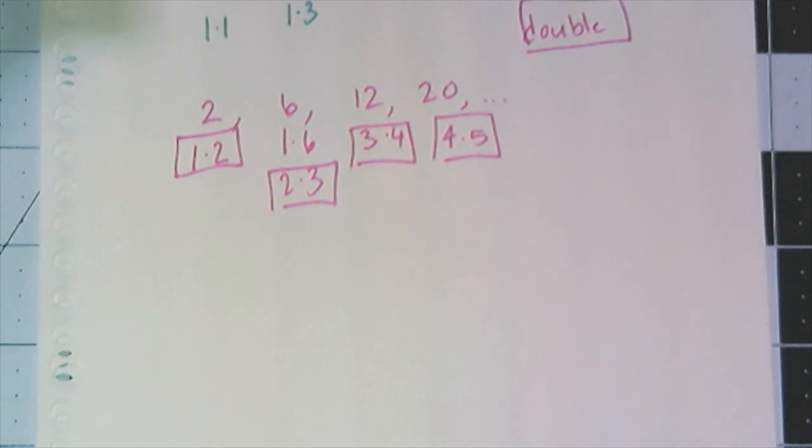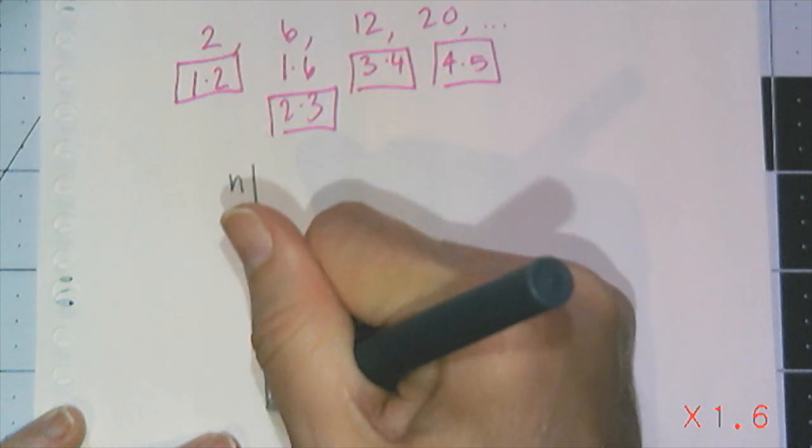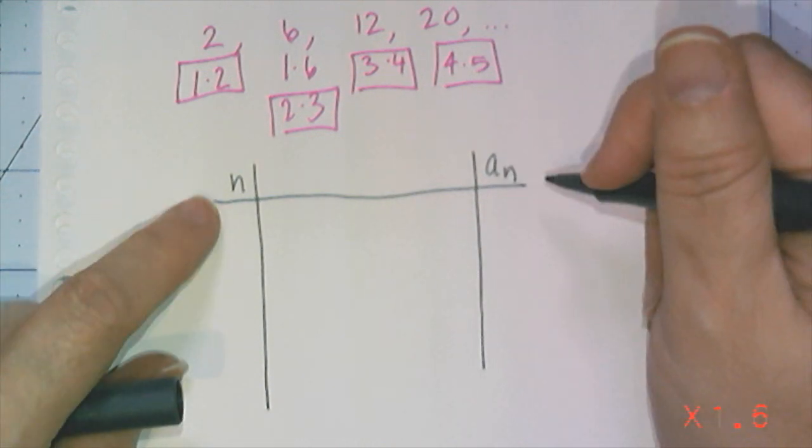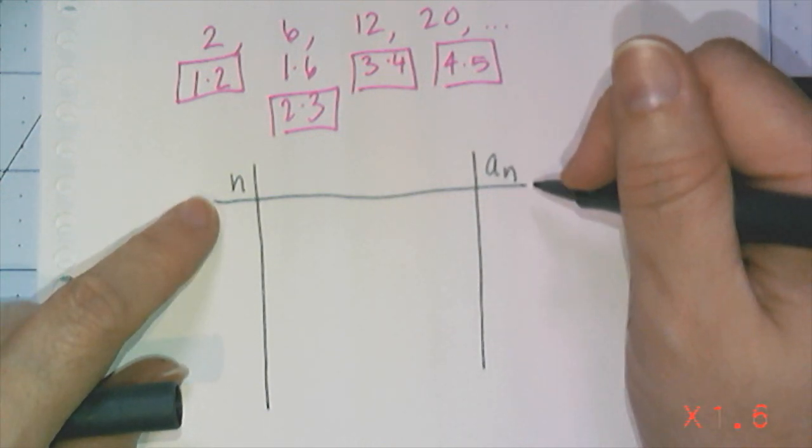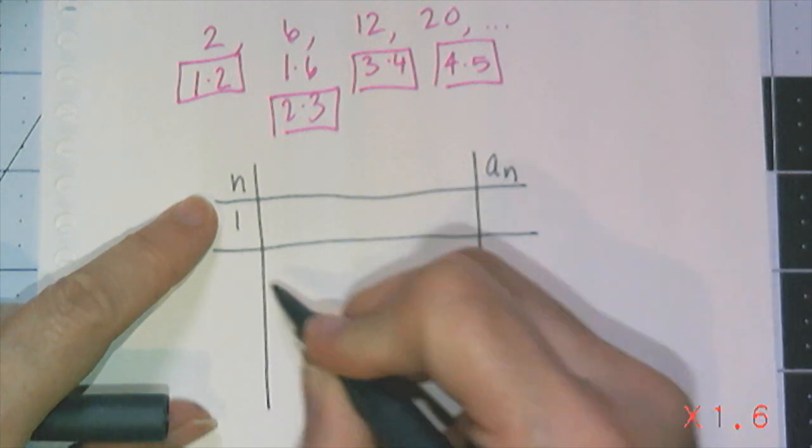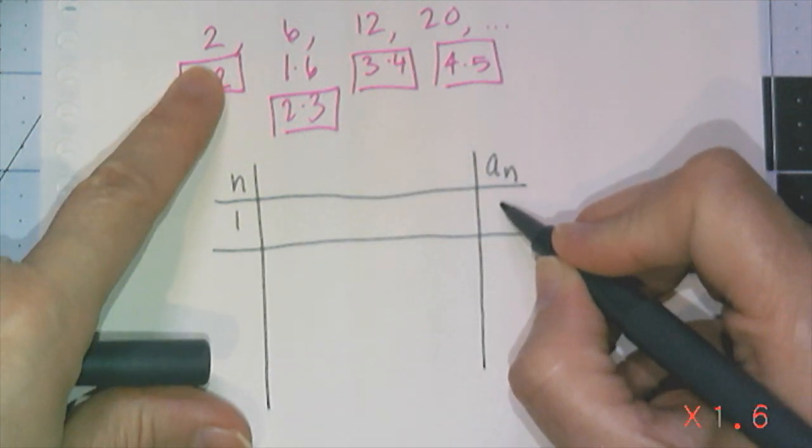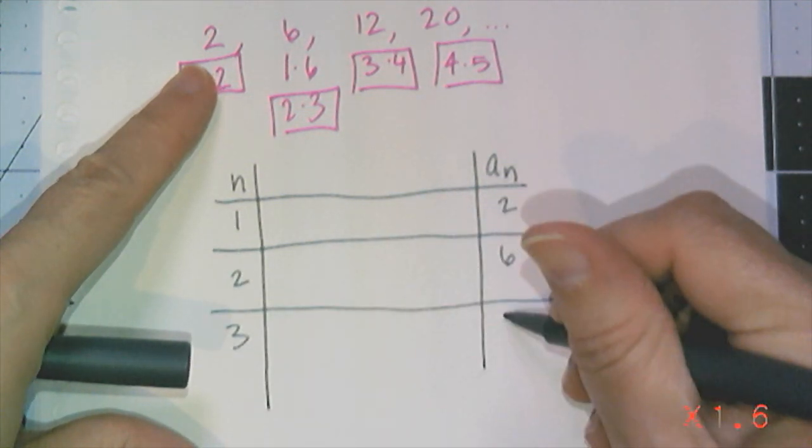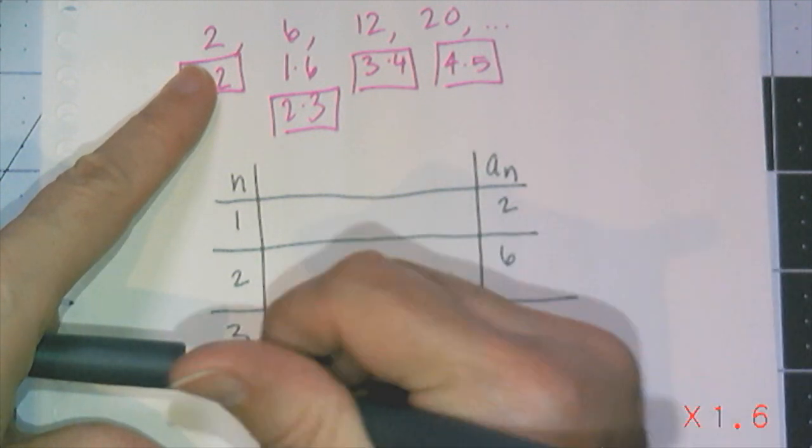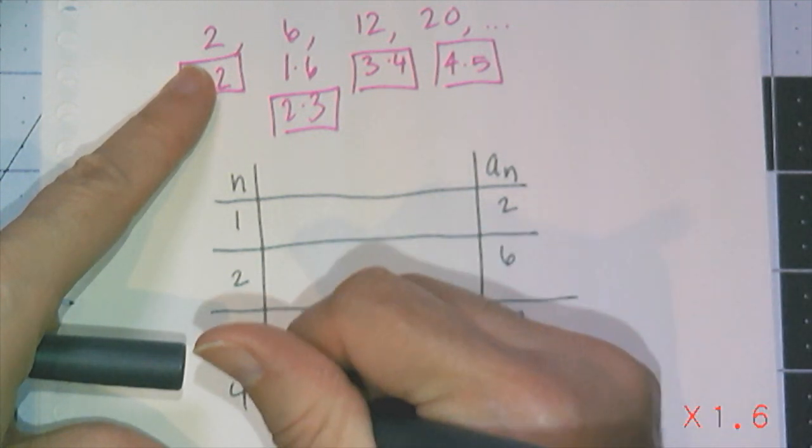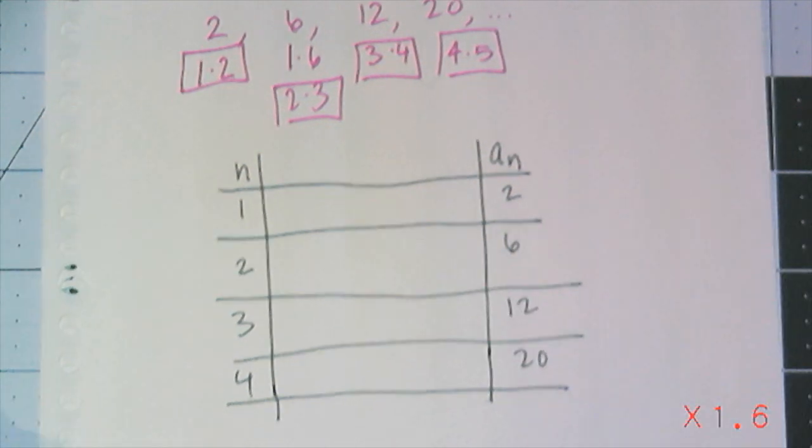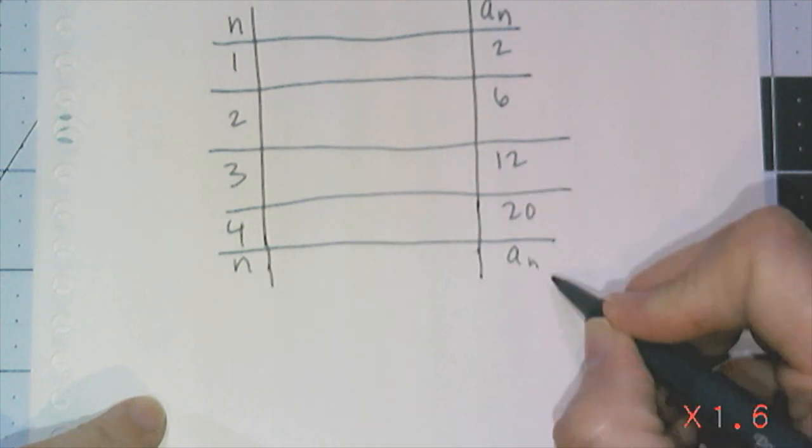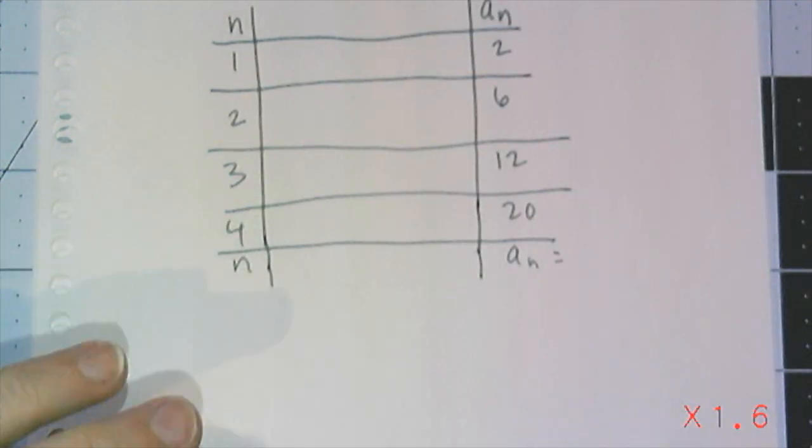So once again, I'm going to do my table, remembering that when I write rules for sequences, what I am doing is tying the term a sub n to the number of the term with the formula. So I have the first term, which is, remember we're doing the double, so 2. The second term, which is 6. The third term, which is 12. And the fourth term, which is 20. And then of course, the nth term, which is a sub n, the rule I'm looking for. All right, now write out my factors.